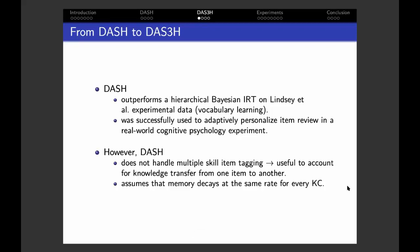We chose to base our new DAS3H model on the DASH model because DASH had shown higher predictive performance than a hierarchical Bayesian version of the well-known item response theory model on real-world experimental data based on vocabulary learning. Also, mainly because it was successfully incorporated within a real-world cognitive science experiment showing that adaptive spacing algorithms would be better in terms of student long-term memory than fixed spaced schedules. However, we had to extend this DASH model to handle multiple-skill item tagging. We expected this would help improve the model predictive performance. Also, the original DASH assumed that memory decays at the same rate for every skill. We hypothesized that this led to model underfitting.